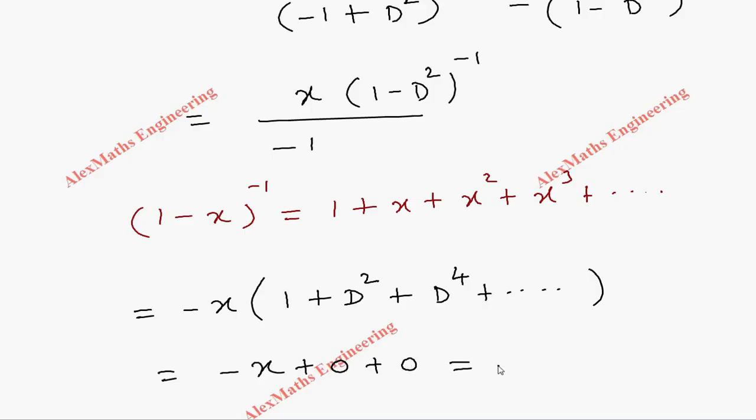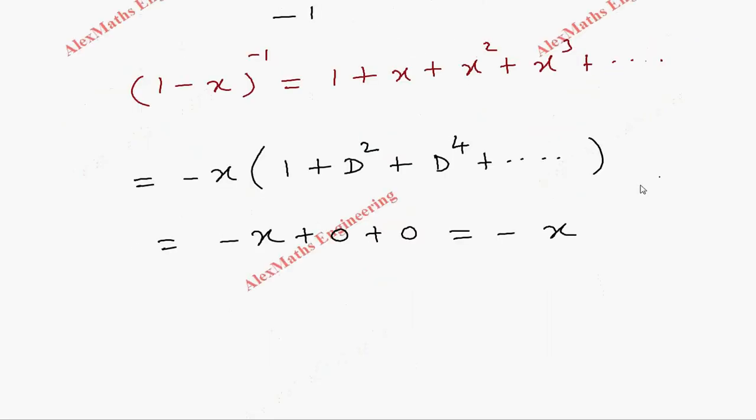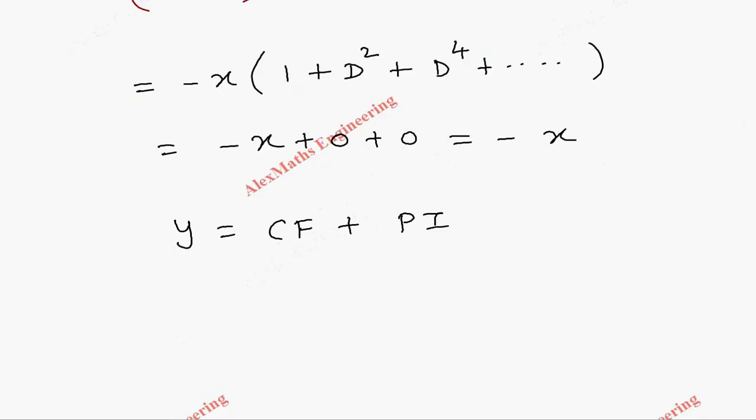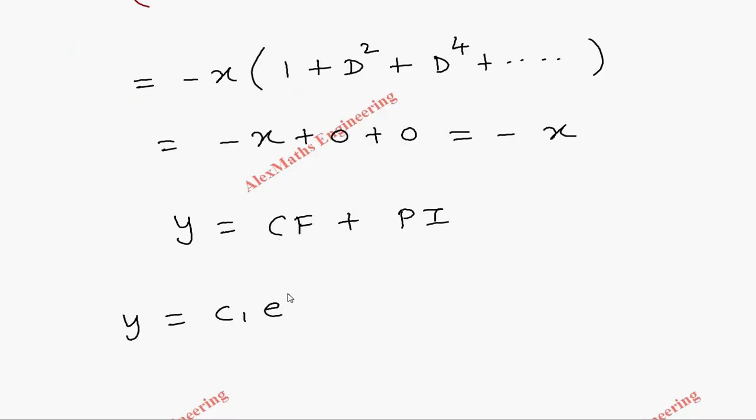Therefore the complete solution is CF + PI, and y = c₁e^x + c₂e^(-x) - x.